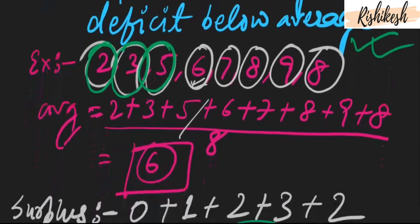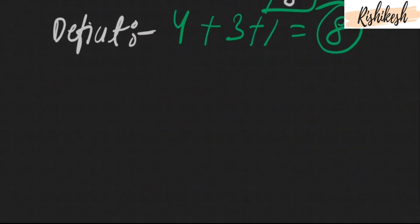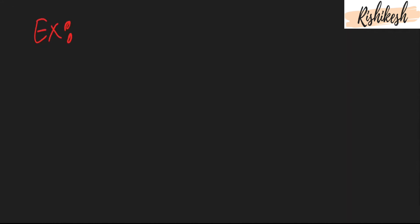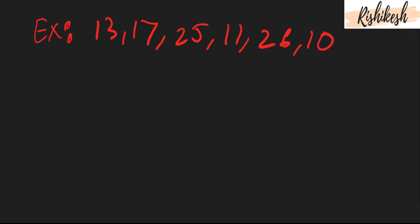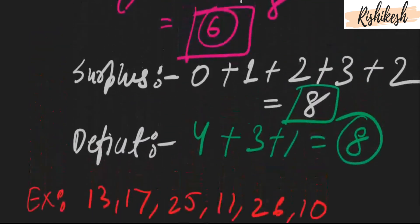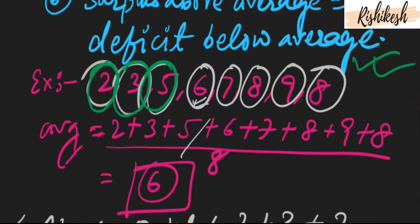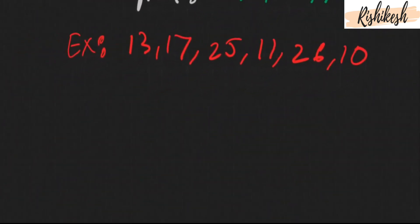We will use this property to solve a question on averages. We have a set of quantities: 13, 17, 25, 11, 26, and 10. One method is to add all and divide by 6. But can we use the surplus/deficit property to find the average? Yes, we can. We assume some average, say 15, and check if surplus equals deficit.